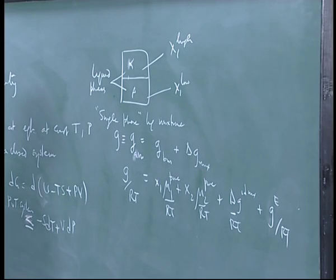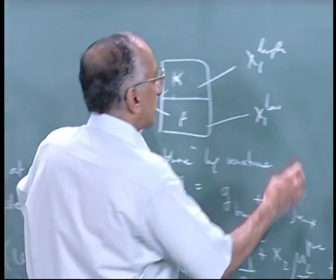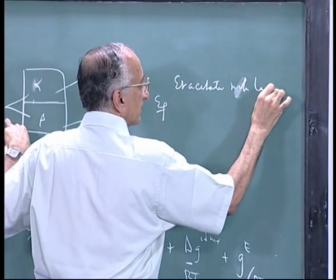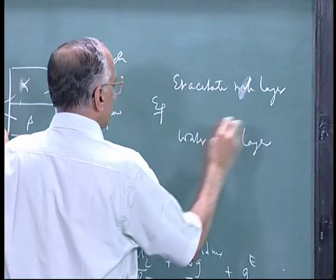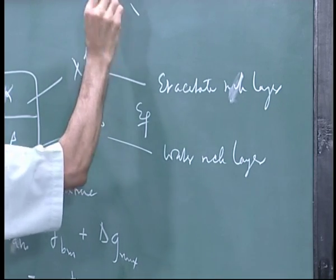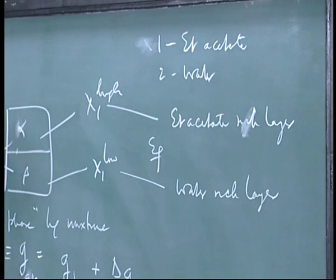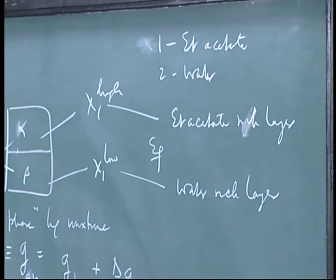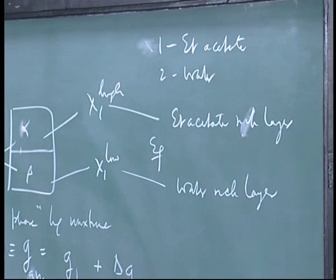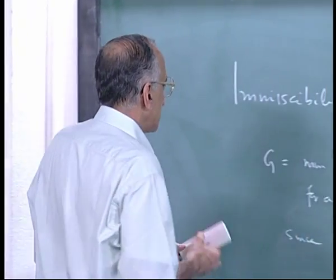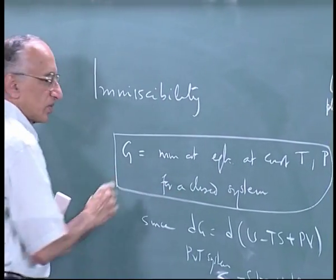Considering only two components — for example ethyl acetate and water without azadiractin — you would get an ethyl acetate rich layer and a water rich layer. Component 1 is ethyl acetate, component 2 is water. When I discussed azadiractin I was talking about two liquid-liquid phases plus a solute distributed between them. I realized I had not discussed immiscibility itself — this explains why a system separates into two phases.